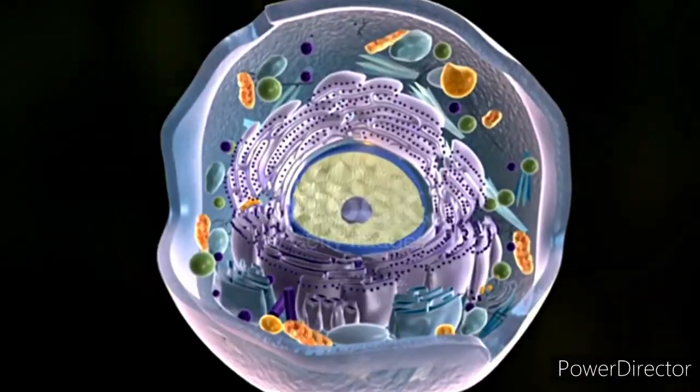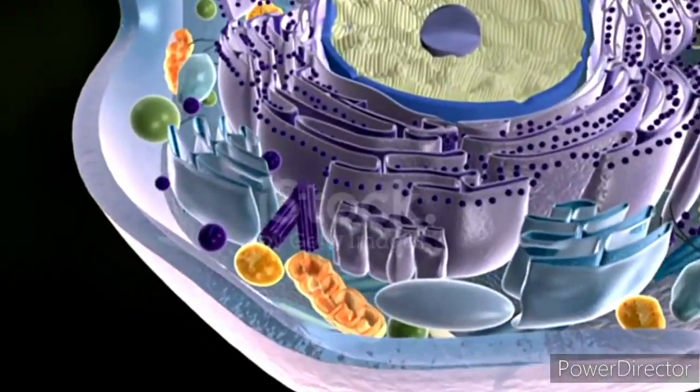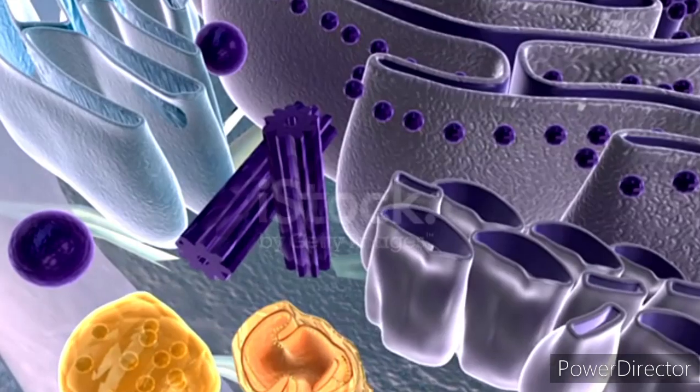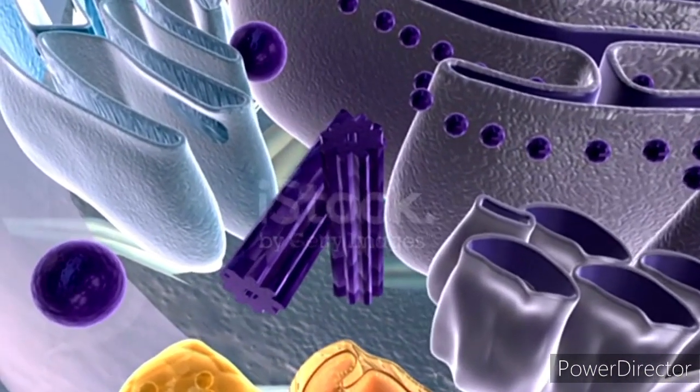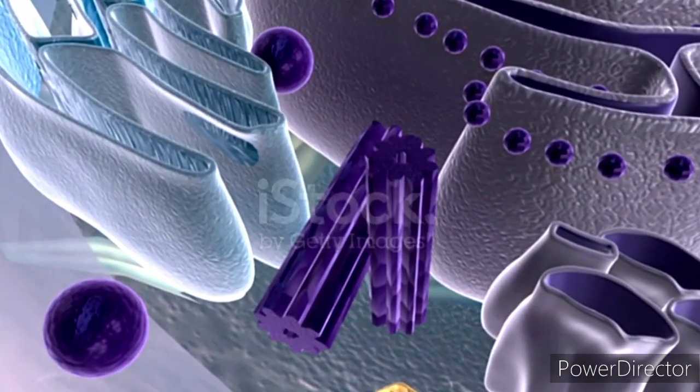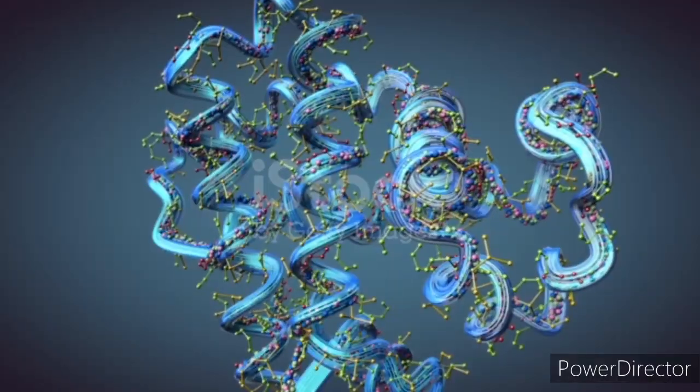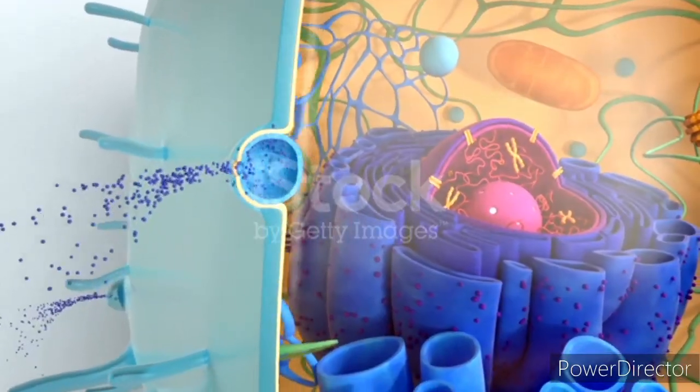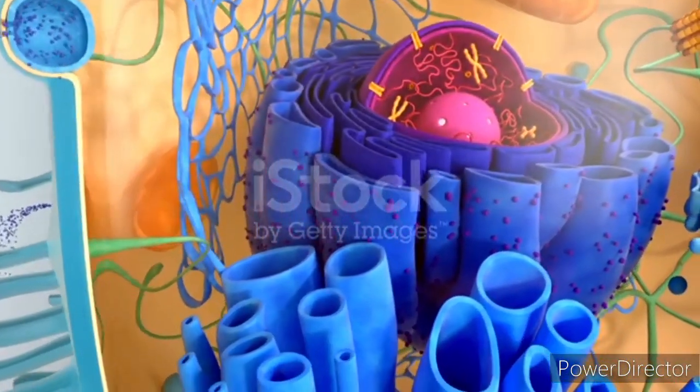The rough endoplasmic reticulum has ribosomes attached to its surface, giving it a rough appearance. The RER is involved in the folding and modification of proteins that are either secreted from the cell or embedded within the cell membrane.